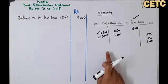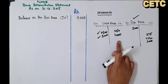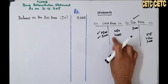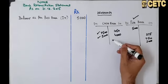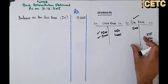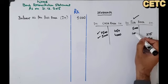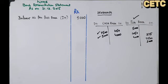جب بھی customer کسی party کو payment کرتا ہے تو party کا نام debit اور bank کو credit کر لیتا ہے۔ اس نے فوراً یہ کام کر لیا، لیکن یہ checks passbook میں نہیں پہنچے — passbook میں debit ہونے چاہیے تھے لیکن نہیں ہوئے۔ Cash book میں credit ہو چکا ہے، passbook میں نہیں ہوا — تو ہم passbook میں debit side پہ لکھ لیں گے: 1,050 اور 4,000۔ A check for rupees 2,000 entered in the cash book debit side was not sent to the bank for collection۔